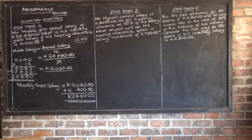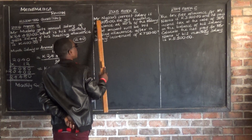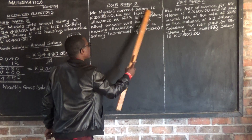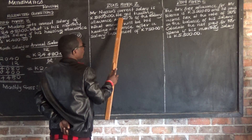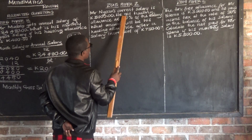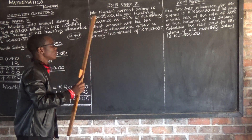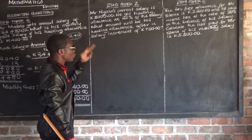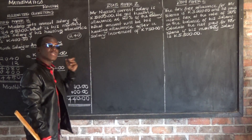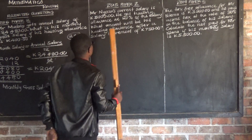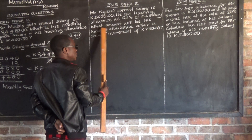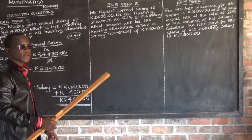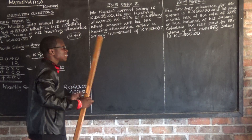Let us now look at 2015 Paper 2. It says: Mr. Angosa's current salary is 5,000. He gets a housing allowance of 20% of the salary. What amount will be his housing allowance after a salary increment of 750 kwacha? You're supposed to understand the question.